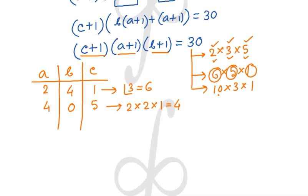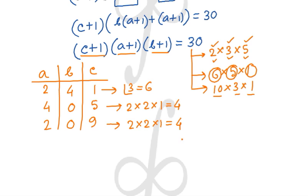For the third case, 10 × 3 × 1: C+1 = 10, A+1 = 3, B+1 = 1, giving C = 9, A = 2, B = 0. Again, 0 cannot be the leading digit, so the digits 2, 0, 9 can be arranged in 2 × 2 × 1 = 4 ways among the three positions.